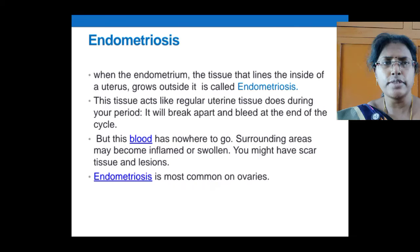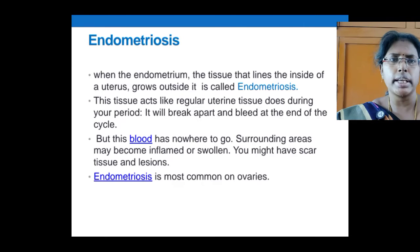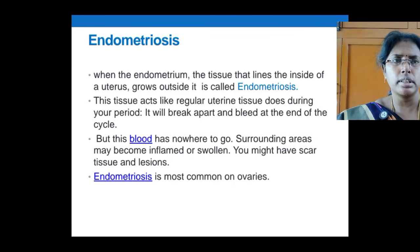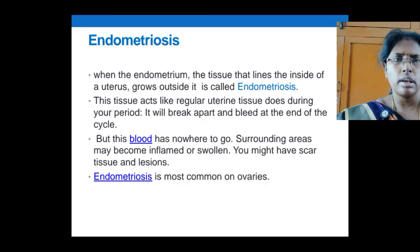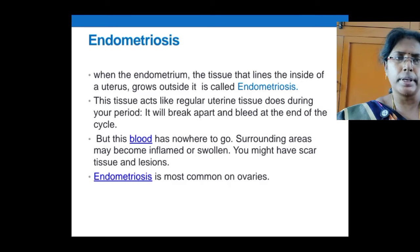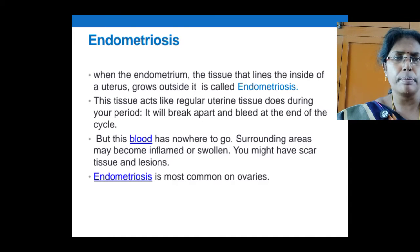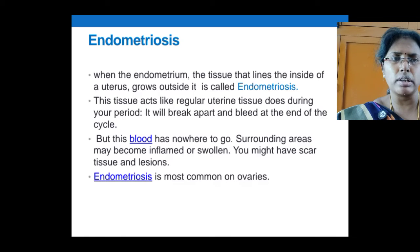The first and foremost problem is endometriosis. The endometrium is the tissue that lines the inside of the uterus, and when it grows outside the uterus it is called endometriosis. This tissue behaves the same as during periods, so all these outgrown tissues will break apart and bleed at the end of the cycle, but this blood has nowhere to go. Surrounding areas can become inflamed or swollen, or you might have scarred tissues and adhesions.